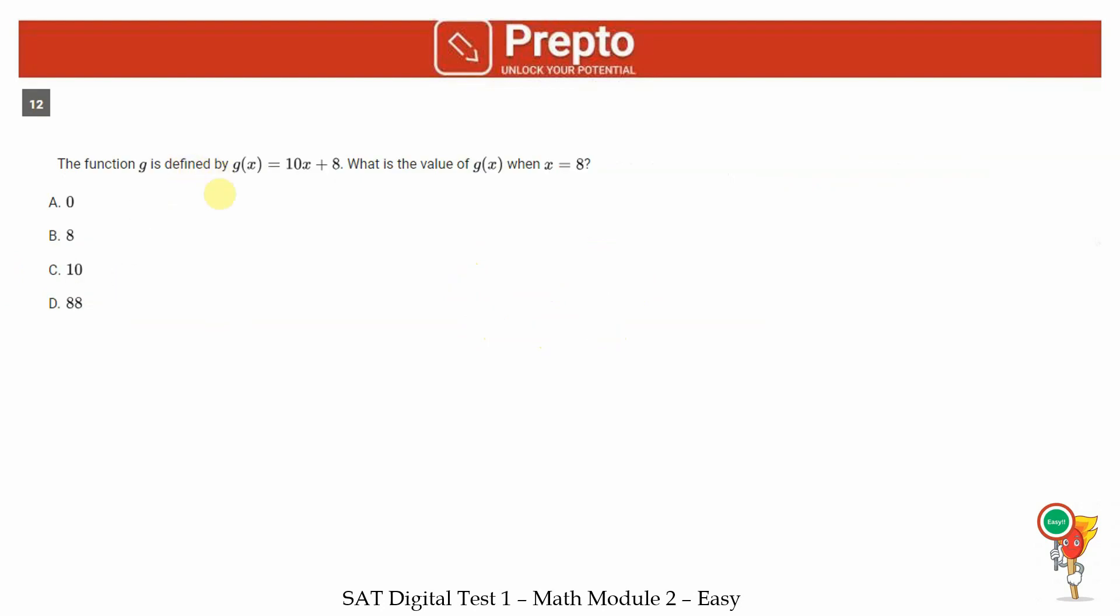Twelfth question. The function g is defined as g of x equals 10x plus 8. This is very similar to the earlier question, x cubed plus 9. We just need to substitute what x is. x is 8. So we substitute 8 here and we get 10 into 8 plus 8, and hence our answer is 88 option D.